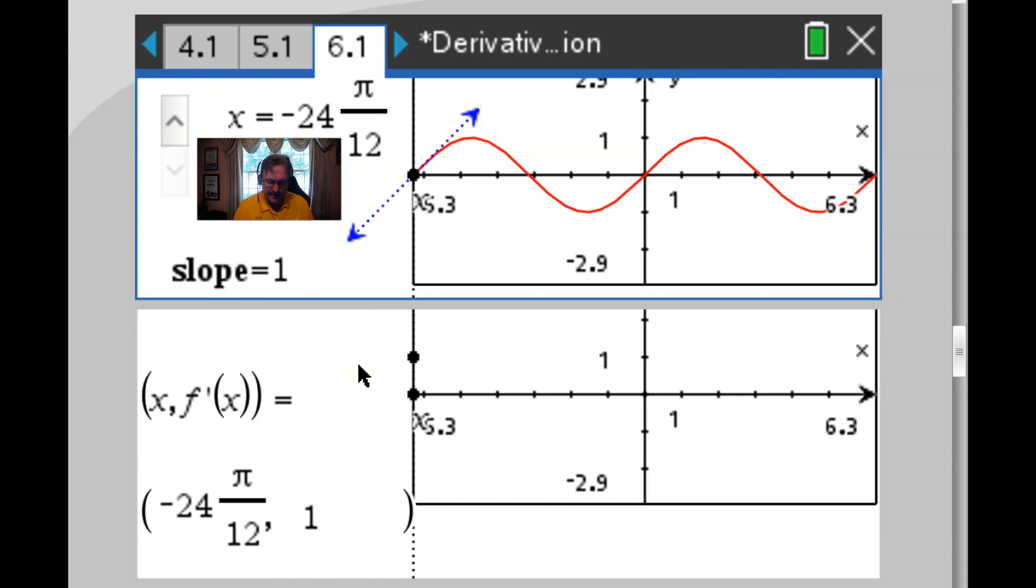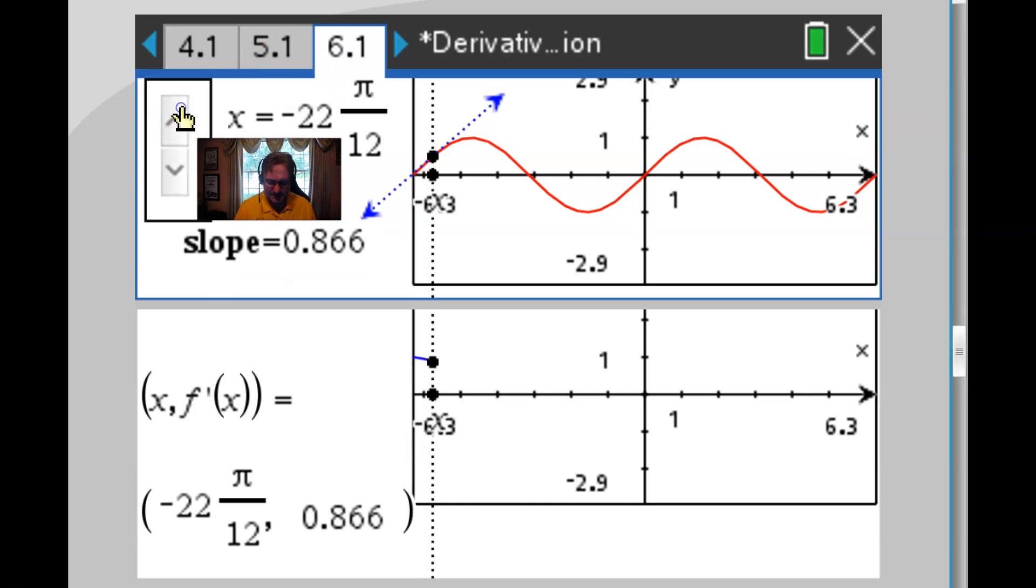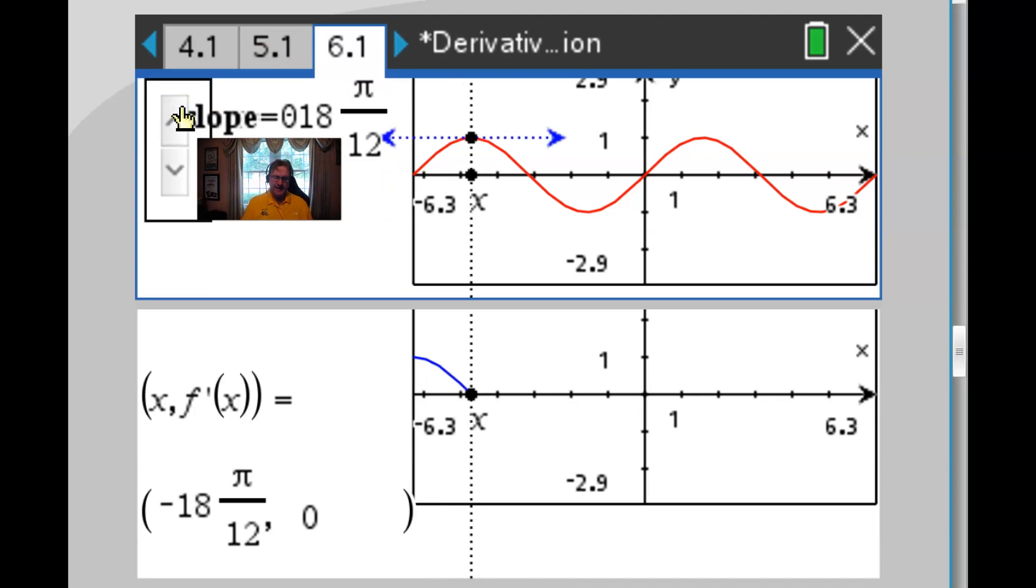What I want you to do is fix your eyes on the bottom of the screen because the bottom of the screen is going to lay out a path for the derivative of this particular sine of x. And you can see that it's denoted by f prime. So I'm going to take the slope of the tangent line that I'm calculating with each click and that slope is going to become the y value of the graph in the bottom of the screen. Let's take a few clicks and see what happens.